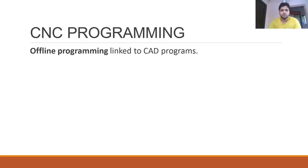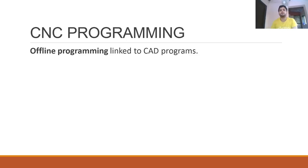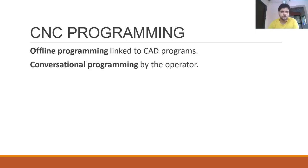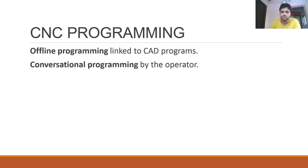There are different ways to look at CNC programming. One is offline programming, which is linked to a CAD program. We create an offline program, submit it to the machine, and the machine control unit decodes the program and gives instructions to all the peripherals. There is also conversational programming, where the operator makes minor changes according to the machine and updates the program.